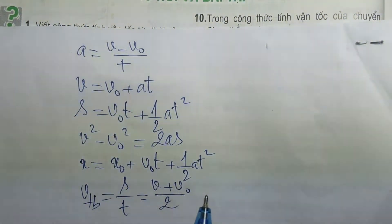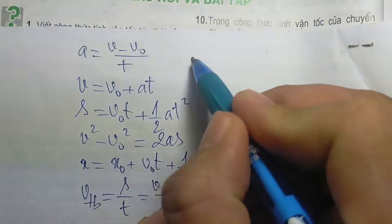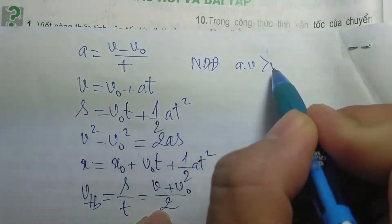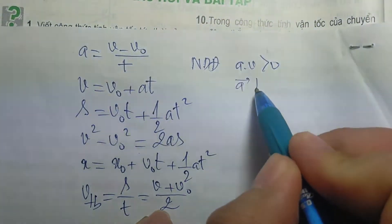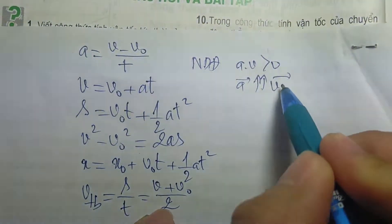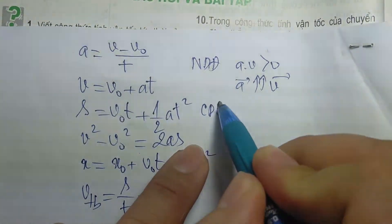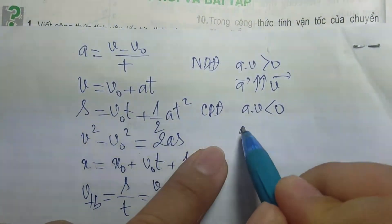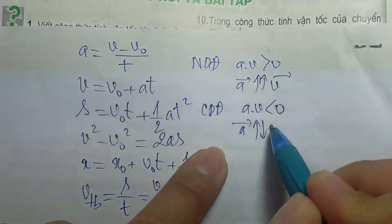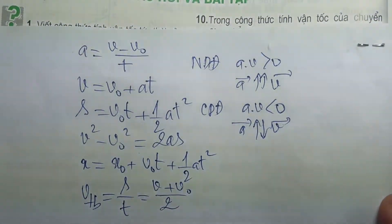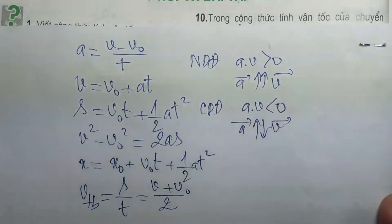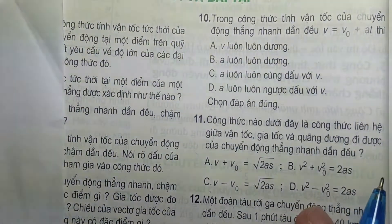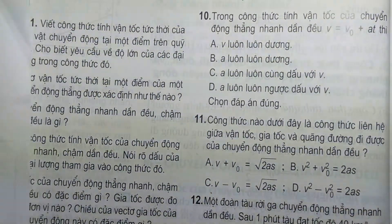Nhanh dần điều: A nhân V là số dương, tức là A luôn cùng hướng với V. Chậm dần điều: A nhân V là số âm, có nghĩa là A ngược hướng với V. Như vậy thầy vừa nhắc lại các công thức. Câu số 11 chúng ta chọn đáp án 11D.